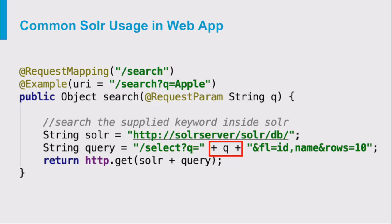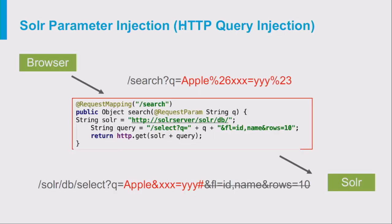Here is how a basic application using Solr looks. It takes one single parameter from the user input and inserts it into the URL in a server-to-server HTTP request. The main issue is that this parameter is not properly URL-encoded, so we can inject additional parameters into the query and they will be smuggled from the web application to the Apache Solr database.